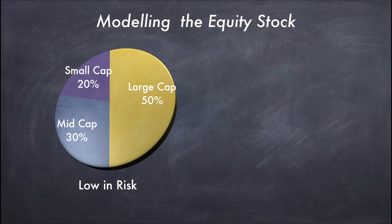Moving on, we invest 30% in mid cap because it is comparatively higher in risk than large cap. When the risk is higher, the reward is also higher, so with mid cap you can expect a higher substantial return, but the downside is also high. Similarly, with small cap the return is even higher, the risk is also higher, and the downside is also higher — so only 20% goes into the small cap section.